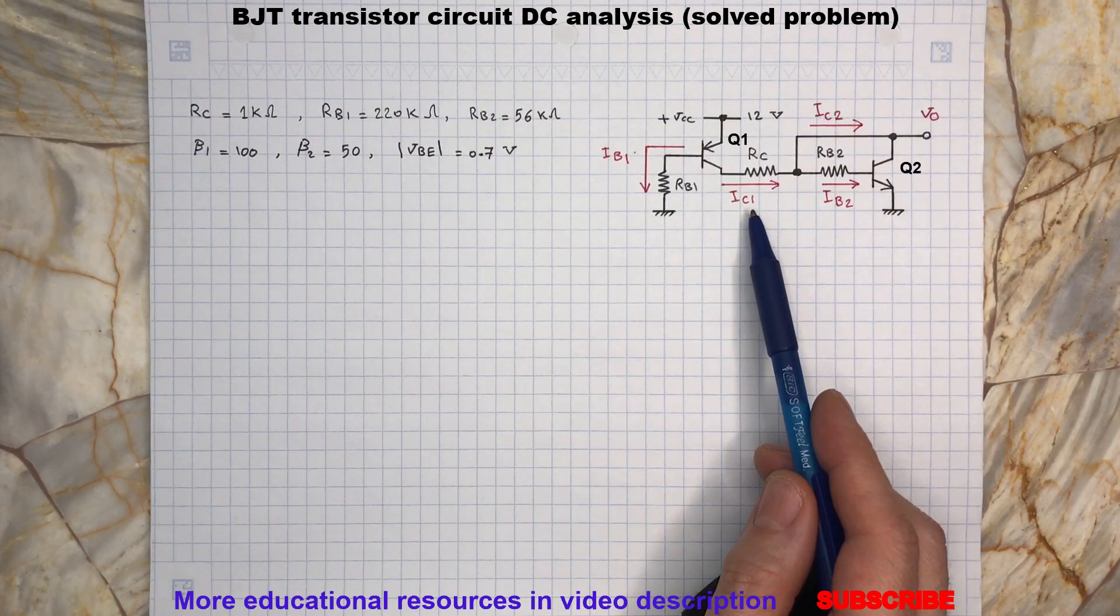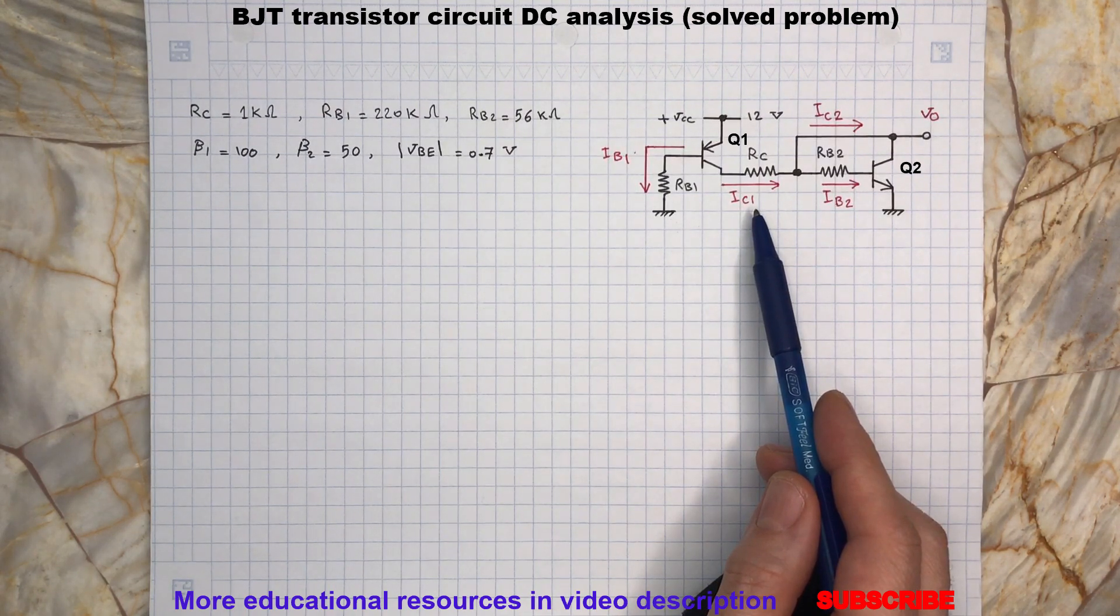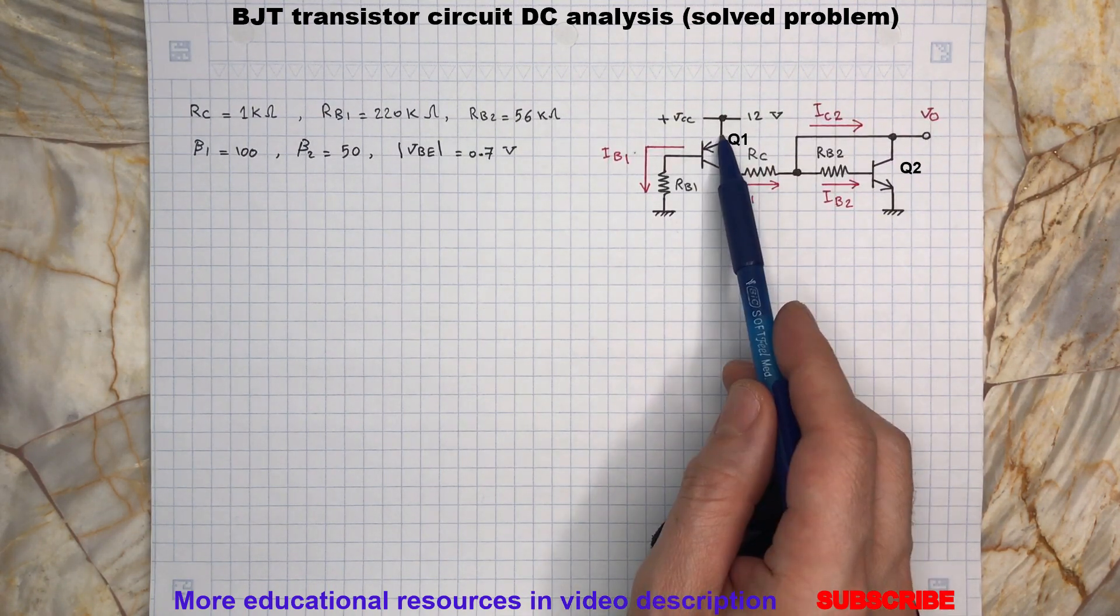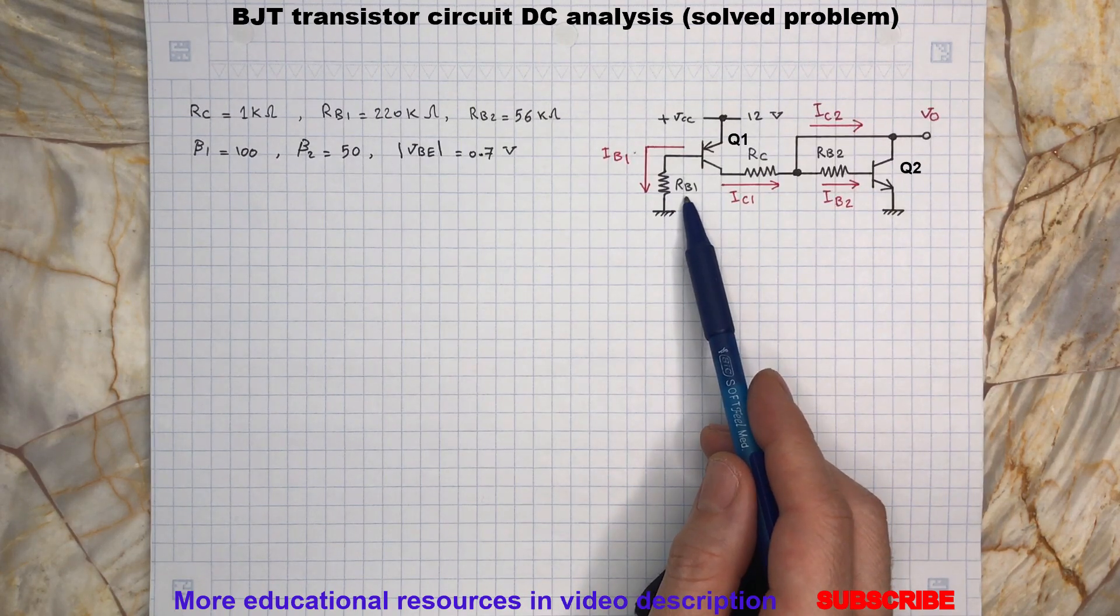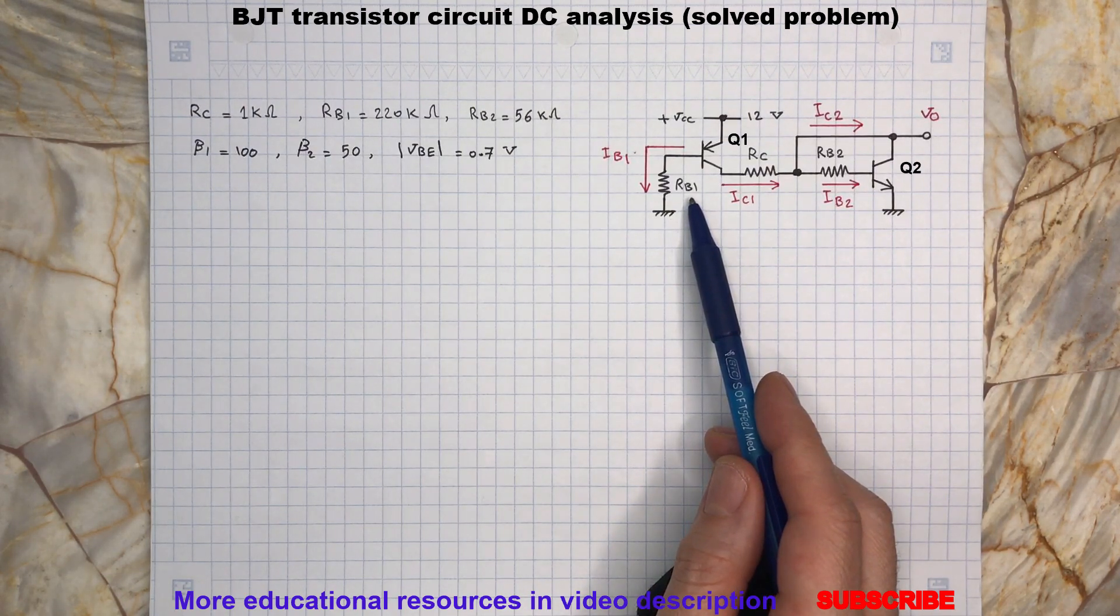Because IC1 is only dependent on supply voltage at the emitter of Q1, the value of resistor RB1 at the base of Q1, and also the value of beta1 which is the current gain.